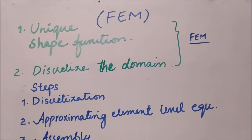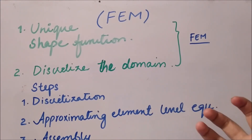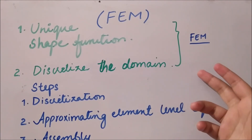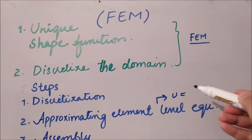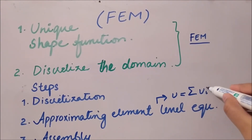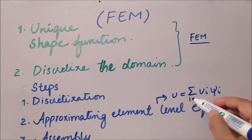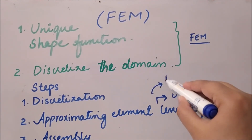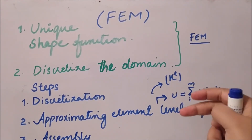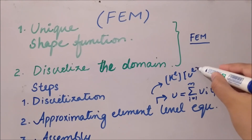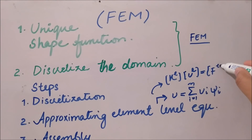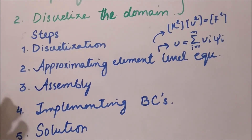In the direct method we approximated an equation for the whole domain, but in FEM we derive the element-level equation for all the typical elements in the mesh. We substitute the dependent variable ui and shape function ψi into the element-level stiffness matrix. Therefore, the stiffness matrix, the dependent variable vector, and the force vector will be different for each element.